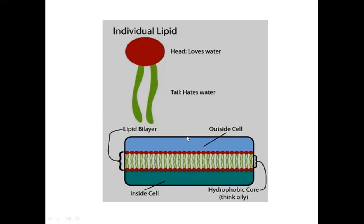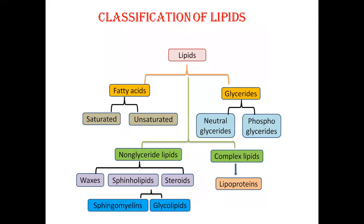The diagram below represents the bilayer of the lipid. You can observe that the red colored structures are facing the exterior, while the green tail-like structures are facing the interior, because they are hydrophobic and cannot be exposed to water. The hydrophilic red structures are water-loving and are exposed to the exterior.